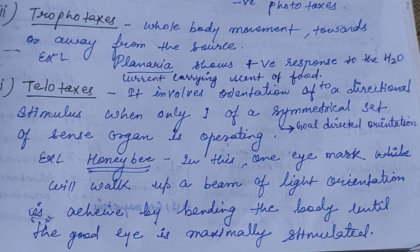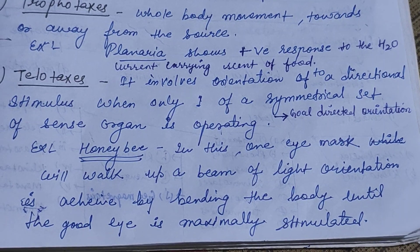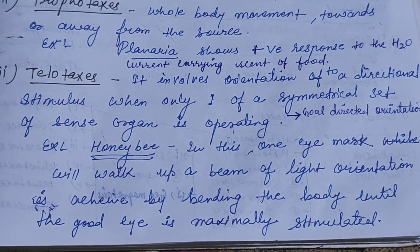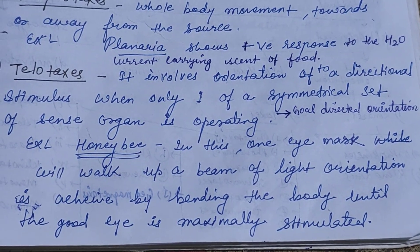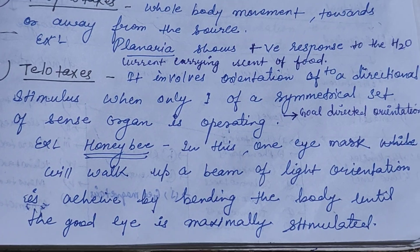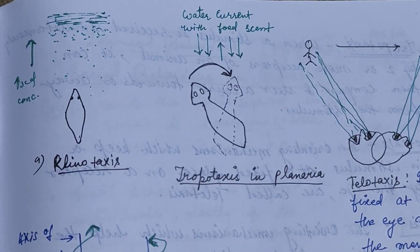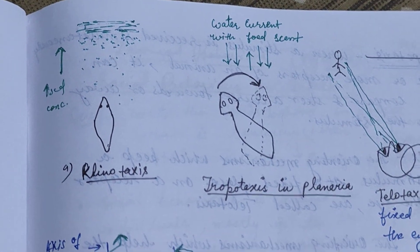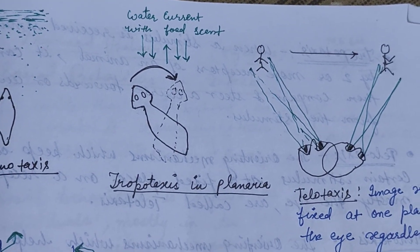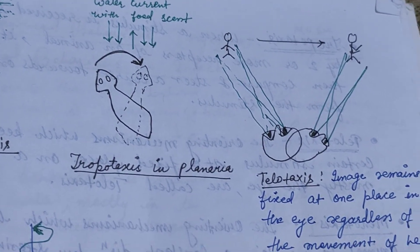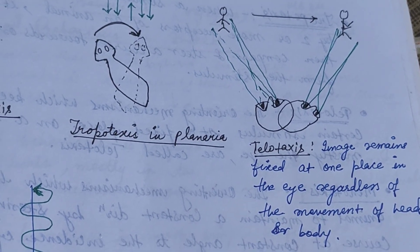Telotaxis involves orientation to a directional stimulus when only one of a symmetrical set of sense organs is operating. It is a goal-oriented, directed orientation. Example: honeybee — a one-eyed individual will walk in a curved path along a beam of light; orientation is achieved by bending the body until the good eye is maximally stimulated. Here is a figure showing klinotaxis in Planaria, tropotaxis, and Planaria moving towards or away from water current with food scent.